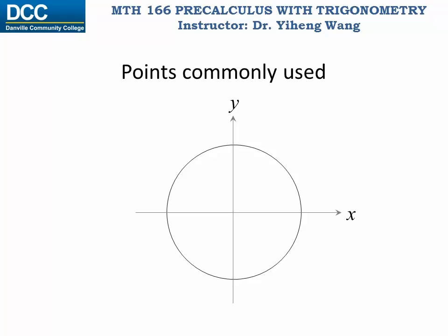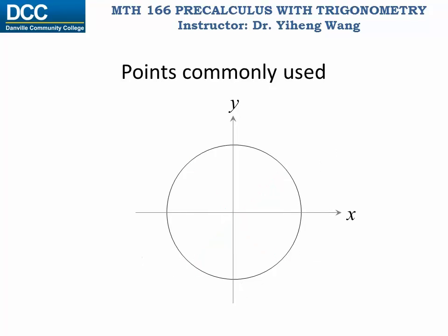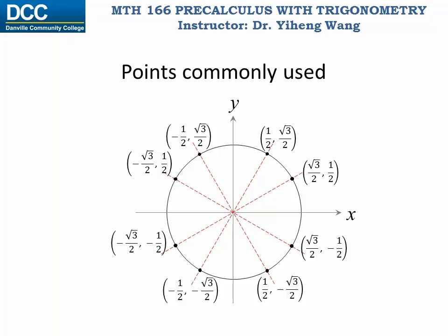Let's look at the coordinates of some common points. The x-axis and y-axis divide the unit circle into four even parts and intercept the circle at four points. If we divide the unit circle into eight even parts, these special points have particular coordinates. And if we divide the circle into twelve even parts, these special points have their own coordinates. Pay attention to how these numbers are related and notice the symmetry.